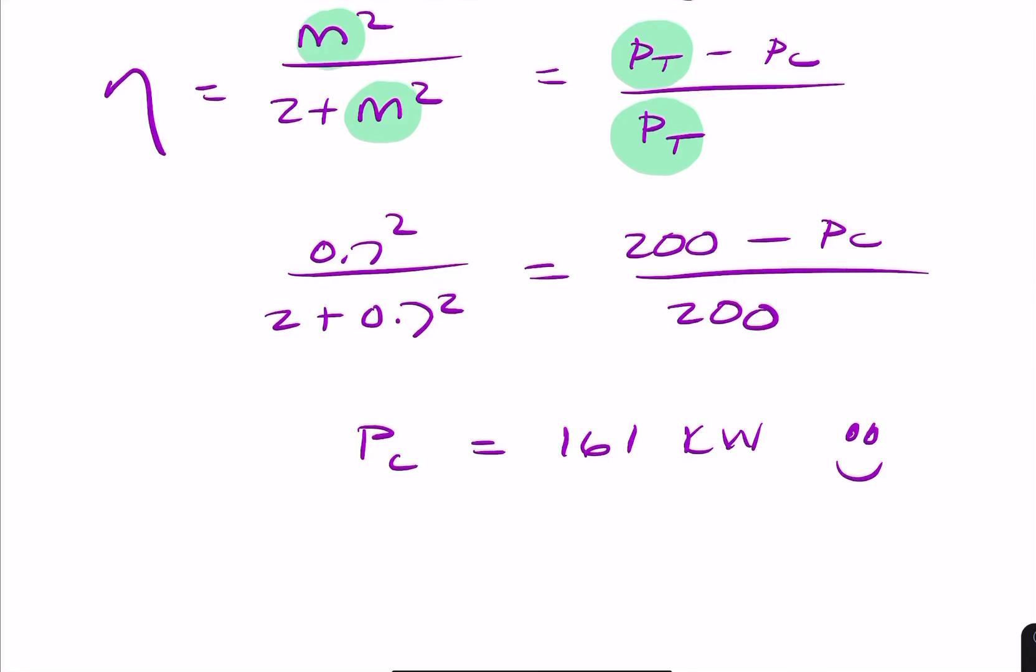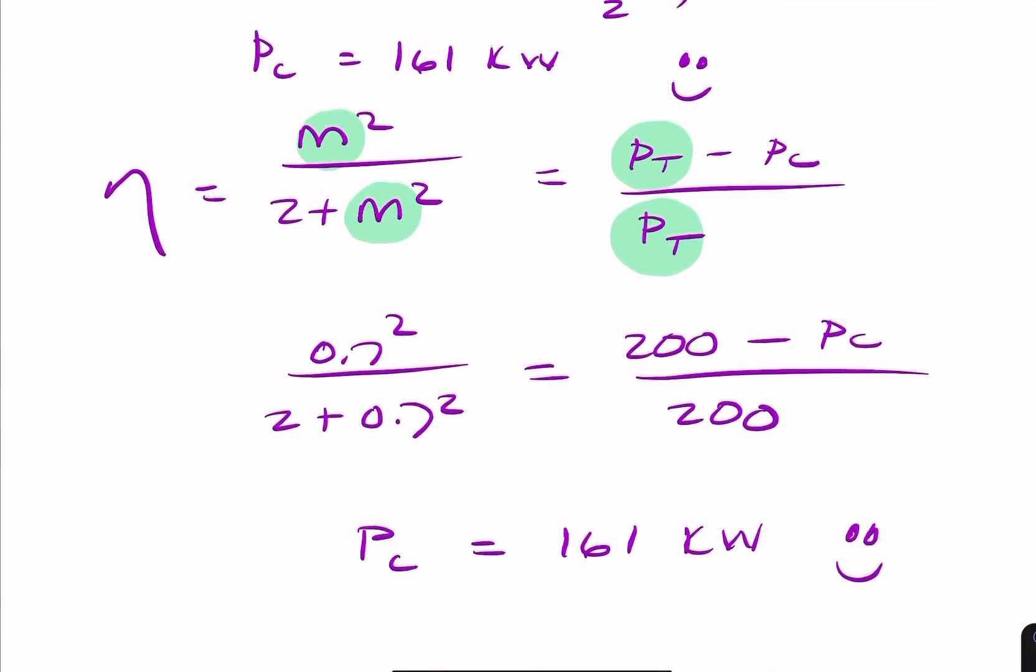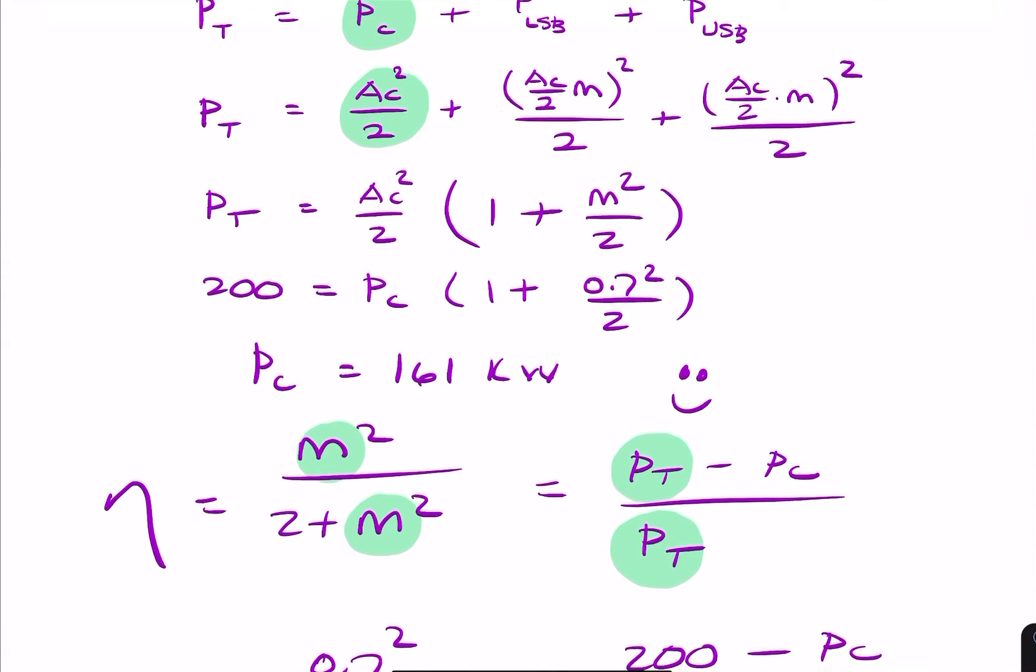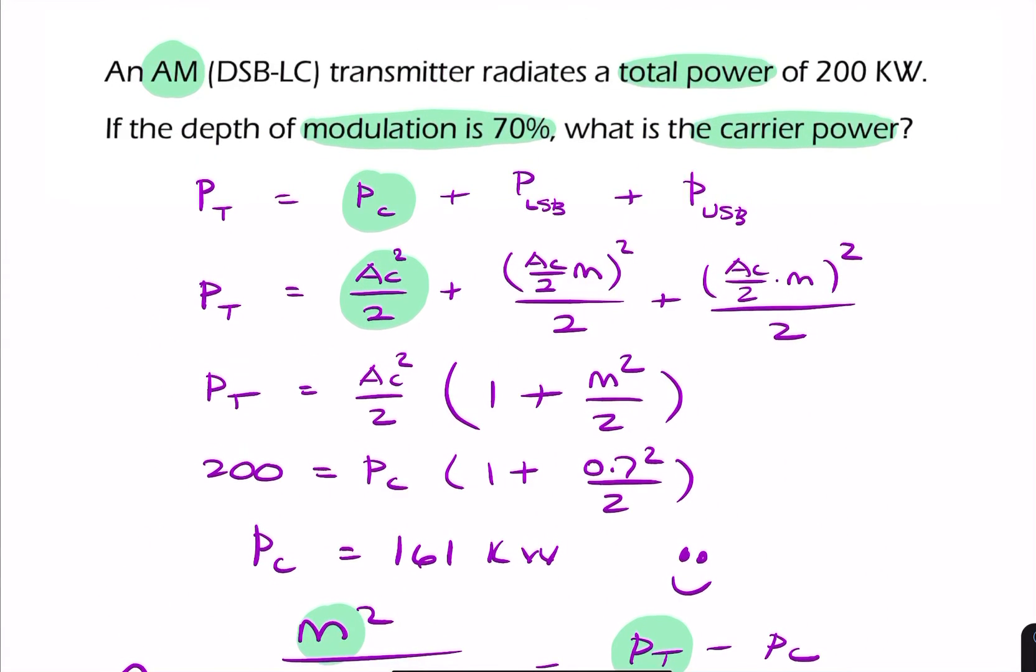So that's two ways of doing it, either by looking at the relationship between the efficiency and the powers or by looking at the amplitudes of the two sidebands.